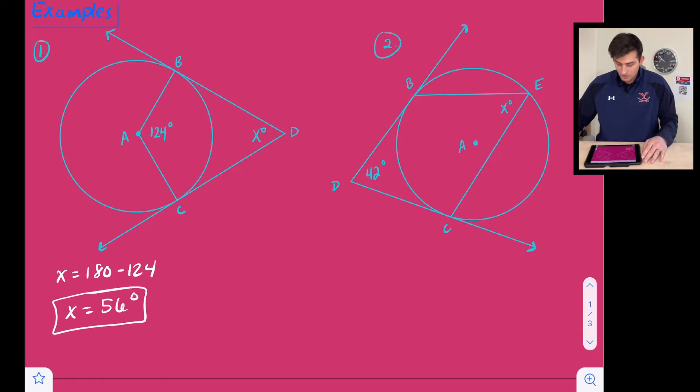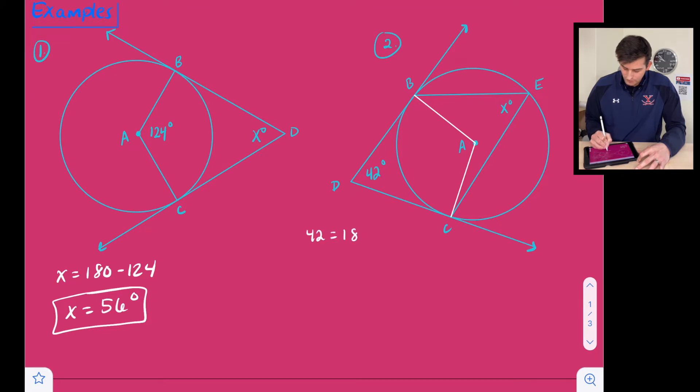Now for number two, we are going to have to apply a little bit of information here. Now we have our circumscribed angle. It's 42 degrees. So if we were to add in our central angle here, angle BAC, we know that 42 should be equal to 180 minus this angle BAC.